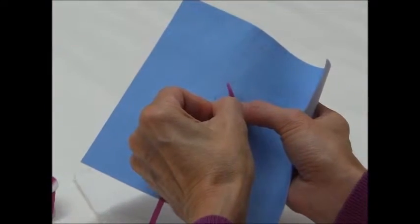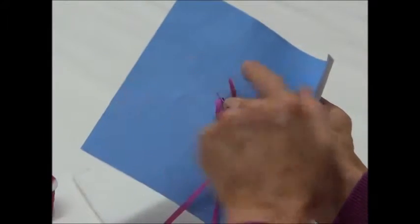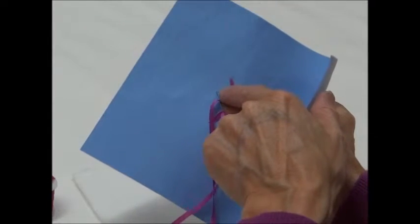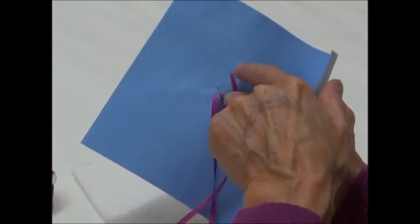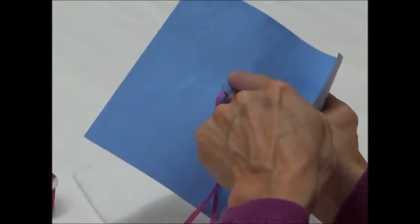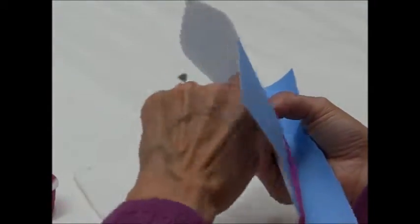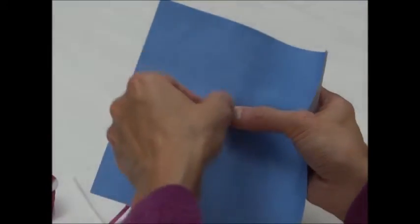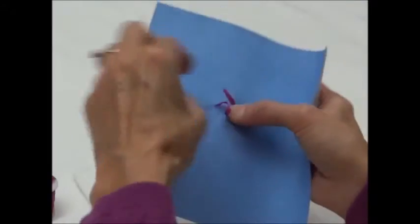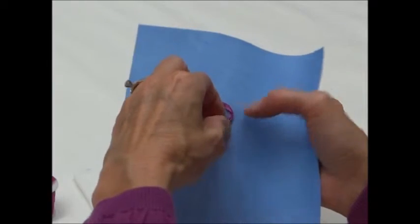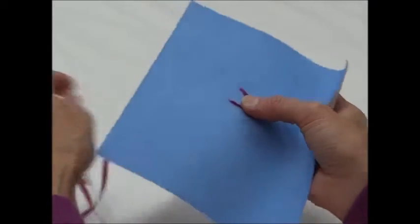Then you will go back into the fabric about catty corner to where you entered. Not evenly but catty cornered and then bring it through the back. And make sure your ribbon is somewhat straight.